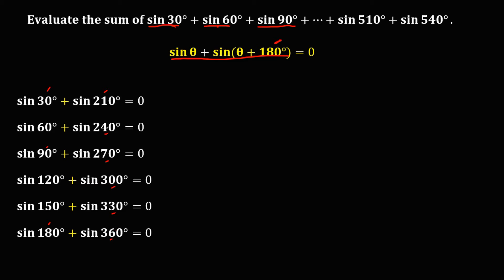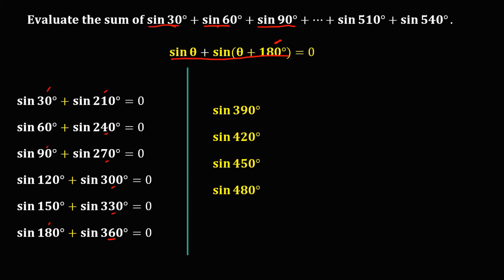So the remaining angles are: 360° + 30° = 390°, then 390° + 30° = 420°. Then we have sin 450°, sin 480°, sin 510°, and the last one, sin 540°.